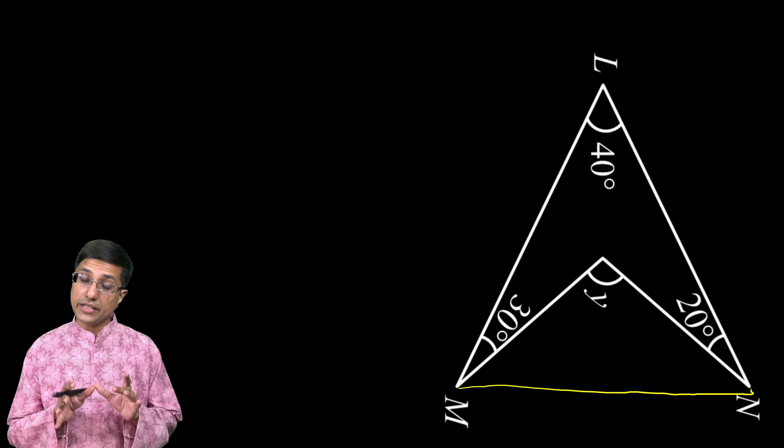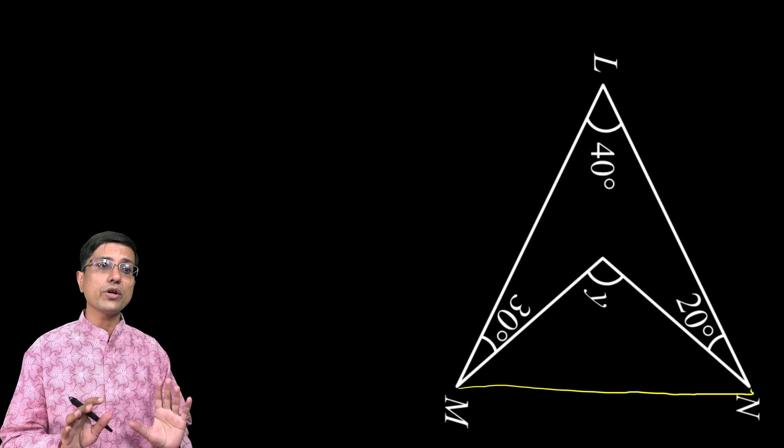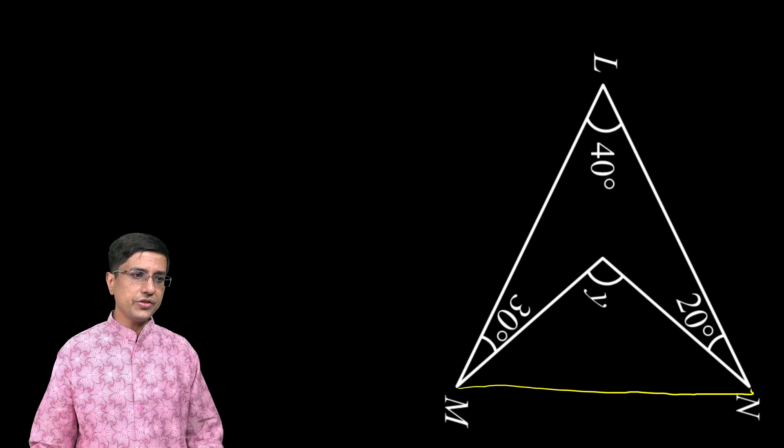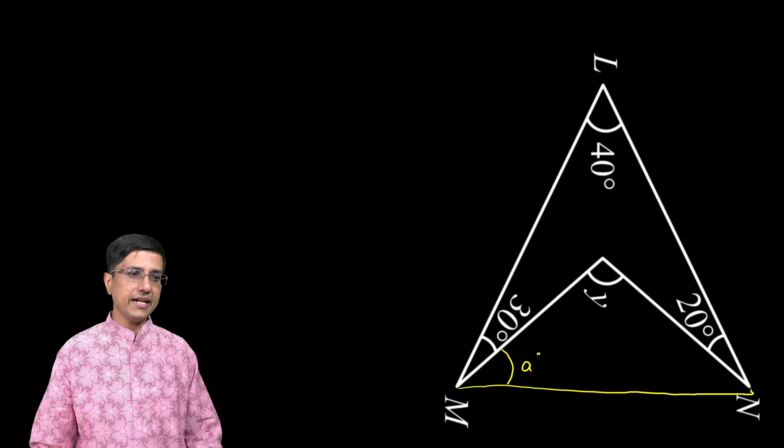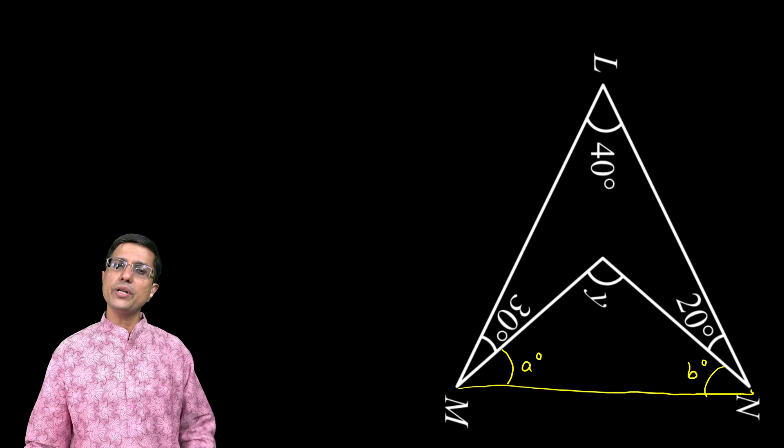This is one way of solving it. There are other ways, believe me, of solving this problem. But this is just one way. We are asked the value of this y. I just assume that this angle is a degrees, and this angle is b degrees. I can assume it, there is no problem there.